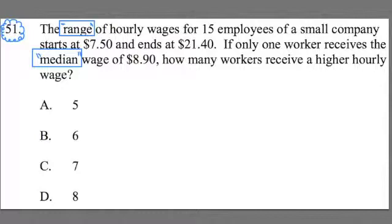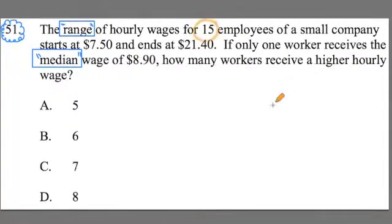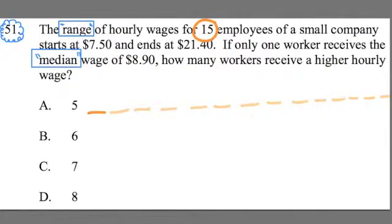For example, we're told that there are 15 employees. So I'm going to draw a little picture. I'm going to do dashes here. Each one of these is one of the employees. So there's 1, 2, 3, 4, 5, 6, 7, 8, 9, 10, 11, 12, 13, 14, 15.